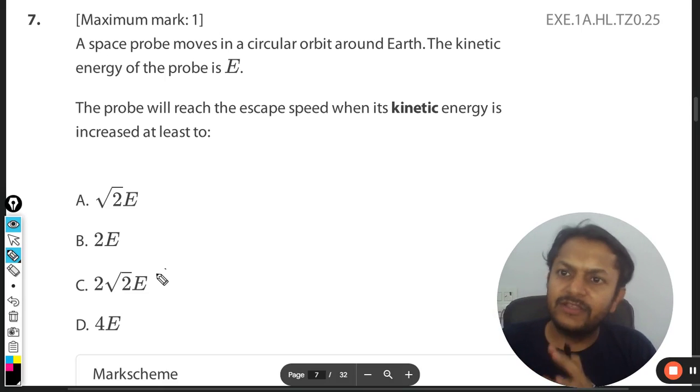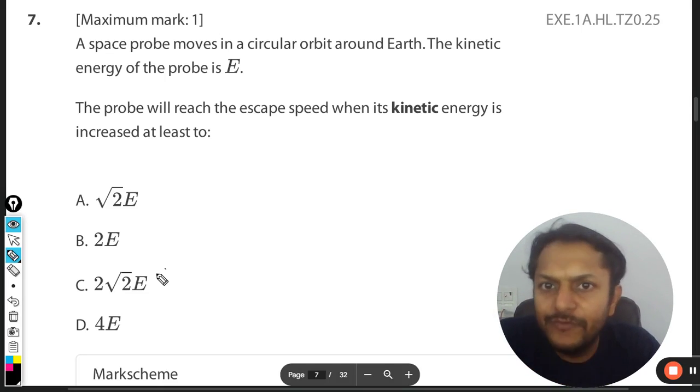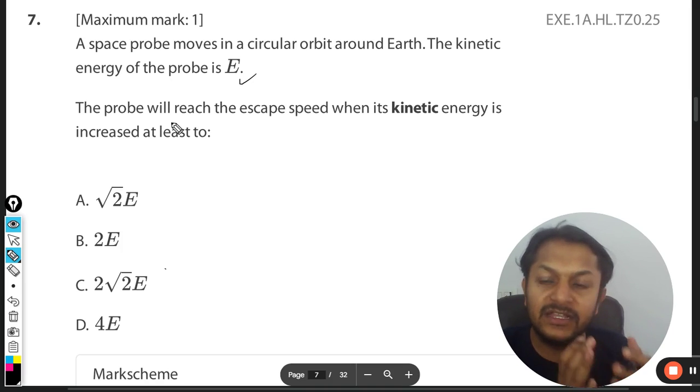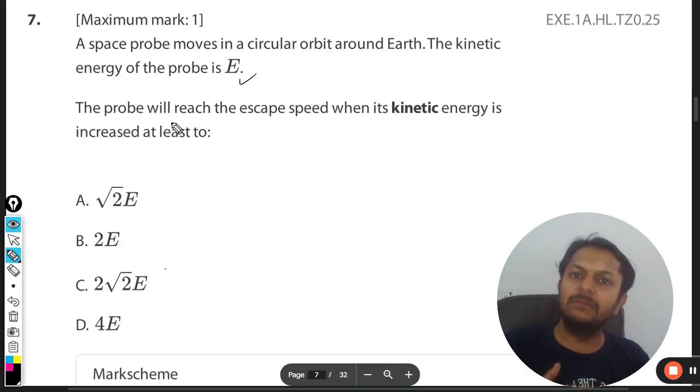Okay student, let's see what is there in this question. A space probe moves in a circular orbit around Earth. The kinetic energy of the probe is E. The probe will reach the escape speed when its kinetic energy is increased to at least... okay, so what is the minimum value to which the kinetic energy should increase?